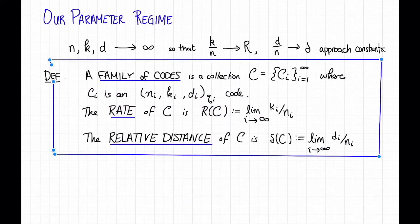Here's the parameter regime that we're going to study for most of this class. We're going to assume that the parameters n and k and d, so that's the block length, the message length, and the distance, are all tending to infinity. And we're going to usually assume that they are doing so, so that the ratio k over n, that's the rate of the code, is tending towards some constant R. And the ratio d over n, that's the relative distance of the code, is tending towards some constant delta.